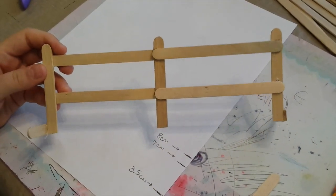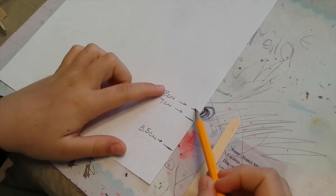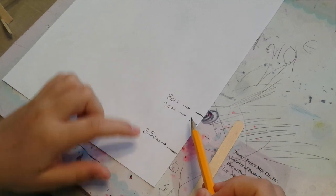The first thing we're going to do is make a bunch of fence. You're going to take your first popsicle stick and you're going to mark on a piece of paper 8 centimeters, 7 centimeters, and 3.5 centimeters.